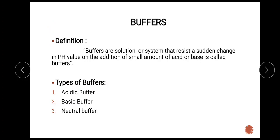The definition of buffer: a buffer is a solution or system that resists a sudden change in pH value on the addition of a small amount of acid or base. A buffer solution consists of a mixture of a weak acid and its salt, or a weak base and its salt. When a small amount of acid or alkali is added to such a solution, no significant change in pH results. There are mainly three types of buffer: first is acidic buffer, second is basic buffer, and third is neutral buffer.